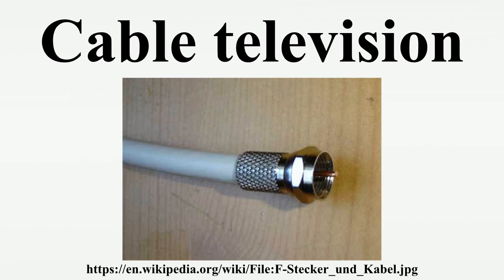Cable was run from community antennas to individual homes. The origins of cable broadcasting are even older, as radio programming was distributed by cable in some European cities as far back as 1924. Analog television was standard in the 20th century, but since then cable systems have been upgraded to digital cable operation.